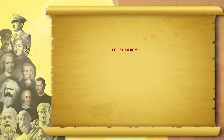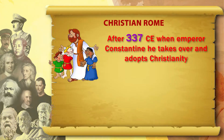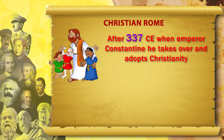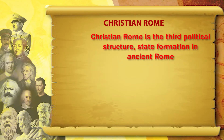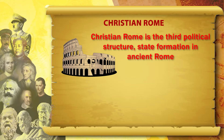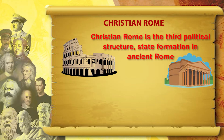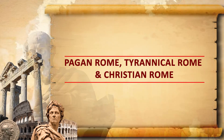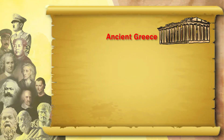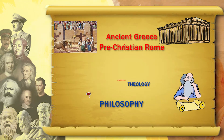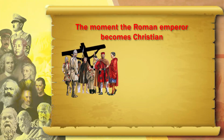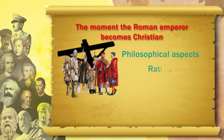The third part of Roman political thought comes after 337 Common Era, when Emperor Constantine, the Roman Emperor, takes over and adopts Christianity. Christian Rome is the third kind of political structure and state formation in ancient Rome. In ancient Greece and in pre-Christian Rome, philosophy and theology were different. But the moment the Roman emperor becomes Christian, the philosophical and rational, non-religious aspects begin to be controlled by Christian theology.